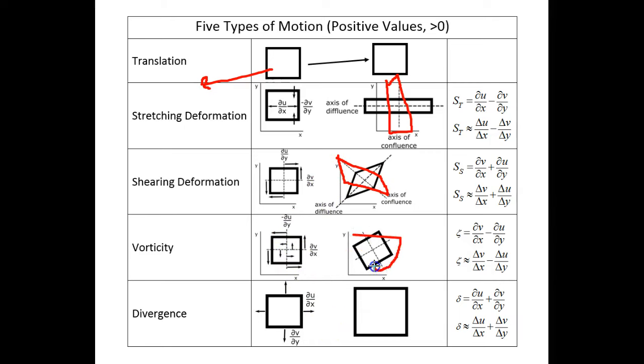Negative vorticity is clockwise. Negative divergence causes the air parcel to shrink, which is called convergence.